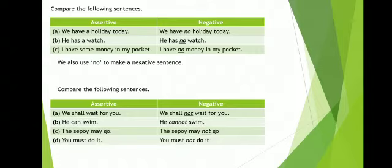Positive and negative — we have to compare. 'We have holiday today.' So here: 'We have no holiday today.' Here we use 'no.' He has a watch. He has no watch. I have some money in my pocket. I have no money in my pocket. We also use 'no' to make a negative sentence.